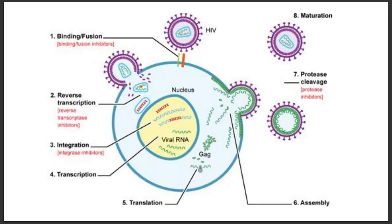At the first step — when HIV attempts to attach to CD4 receptors — we use binding or fusion inhibitors. These bind to the CD4 receptors to prevent HIV from attaching, thereby preventing viral entry. If the virus has already bound and released its RNA and proteins inside, reverse transcriptase inhibitors are used to prevent the conversion of viral RNA into DNA.